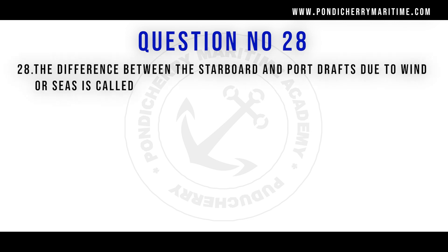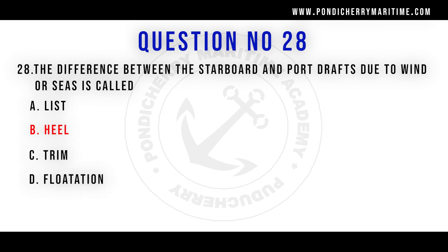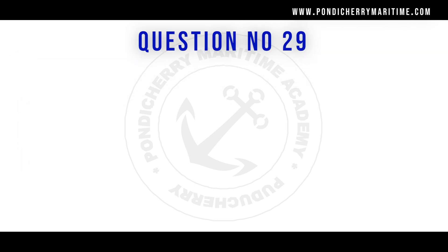Question twenty-eight: The difference between the starboard and port drafts due to wind or sea is called: Option A: List. Option B: Heel. Option C: Trim. Option D: Flotation. Correct answer is Option B, heel.